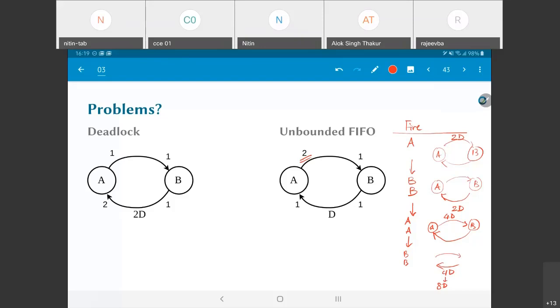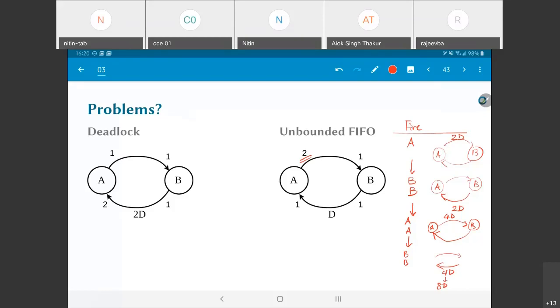So these are the two primary problems in terms of the modeling of signal processing systems that we end up with when we run through something like this static data flow graphs with different numbers of tokens on the production and consumption. Like I said this is a sort of trivial version of deadlock.